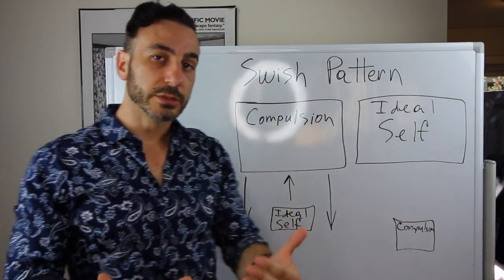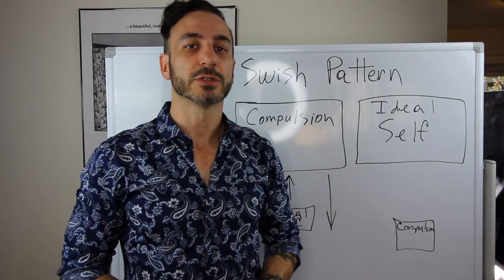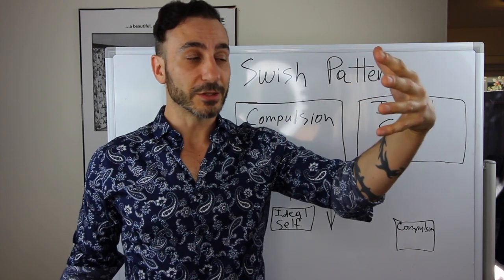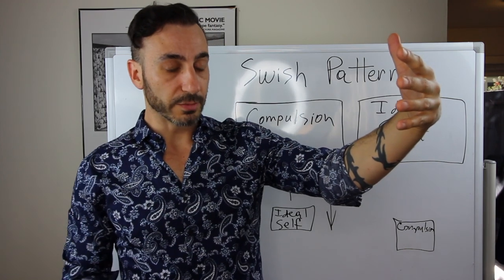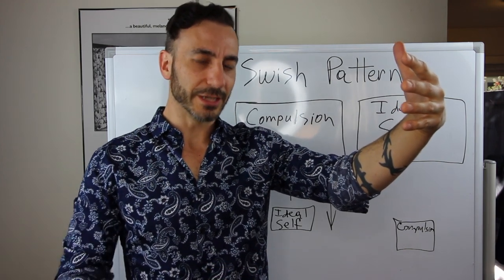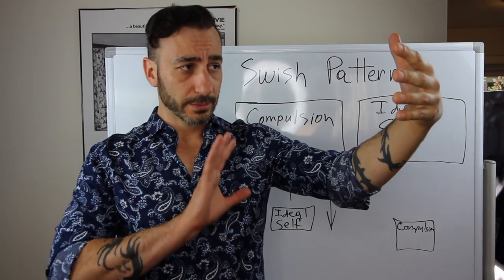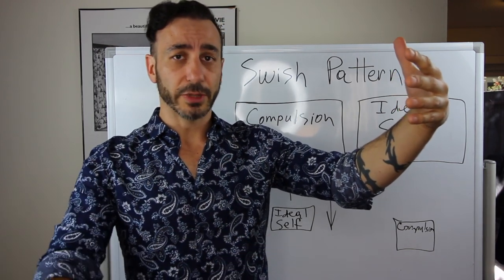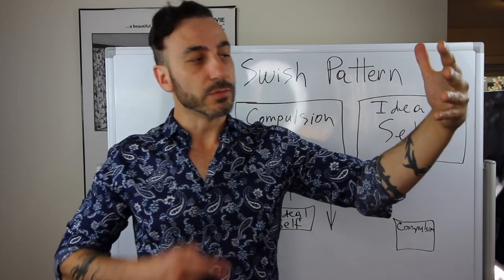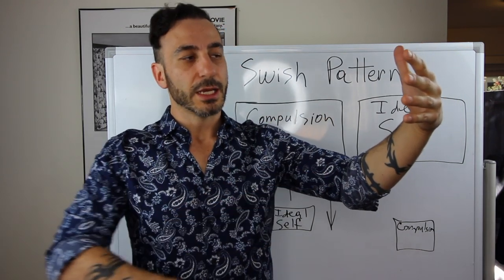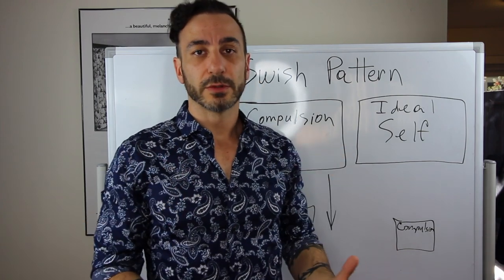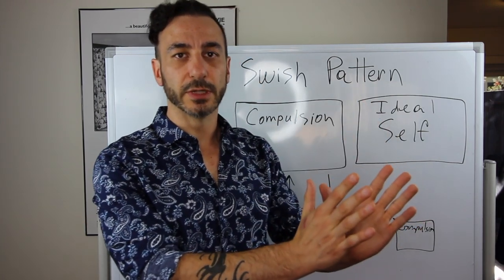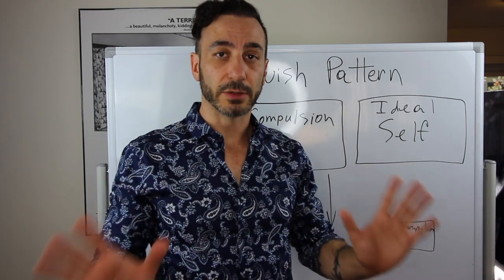When you do that, what you're really doing is breaking that compulsion pattern. The interference being your ideal self gives you a vision of where you want to go. You have a replacement — you're not just trying to not do the behavior you don't want. You're moving that completely out of the picture and giving yourself a vision to move toward: this ideal person who you want to become. Once you program this into yourself, you won't even have to think about it. You'll find whatever behaviors align to this ideal image, and it doesn't matter what context you're in.